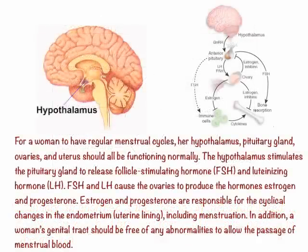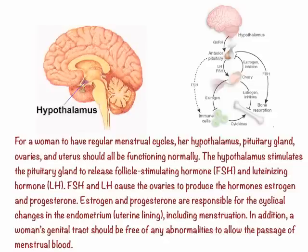For a woman to have regular cycles, her hypothalamus, pituitary gland, ovaries, and uterus should all be functioning normally. The hypothalamus stimulates the pituitary gland to release follicle-stimulating hormone FSH and luteinizing hormone LH. FSH and LH cause the ovaries to produce the hormones estrogen and progesterone. Estrogen and progesterone are responsible for the cyclical changes in the endometrium, which is the uterine lining, including menstruation.